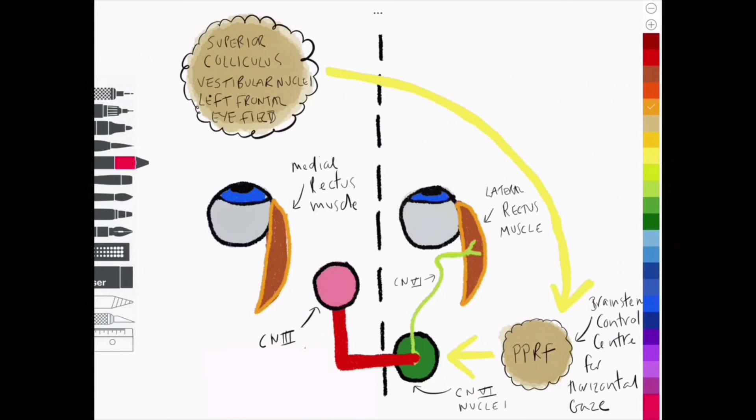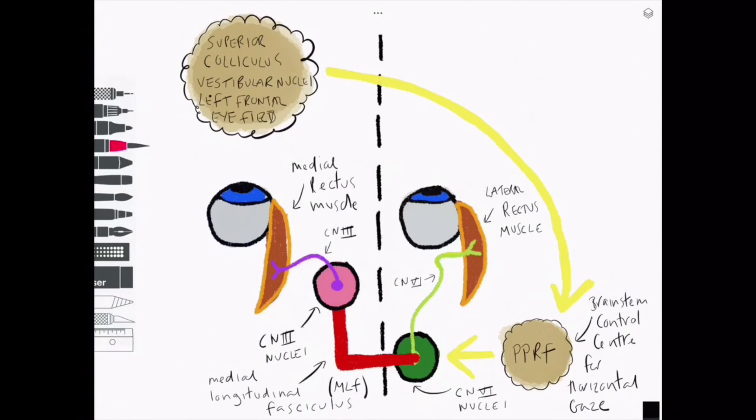The best way to do this is to connect their two control centres, their nuclei. The MLF is the structure that can be seen here in red achieving this.